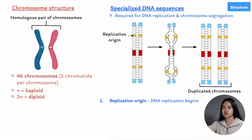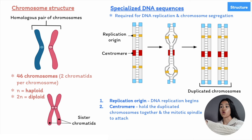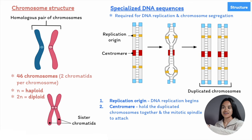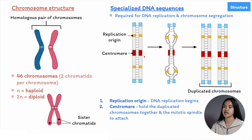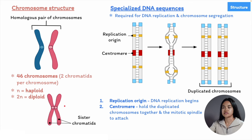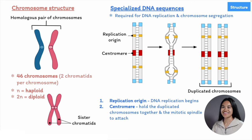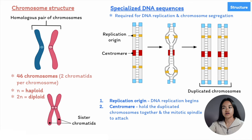Each duplicated chromosome consists of two sister chromatids — two copies of a chromosome — attached to each other by proteins called cohesins, closely joined at the centromere. Each sister chromatid has a centromere, which is the second specialized nucleotide sequence. The centromere assists in holding the duplicated chromosome together and is the region where the sister chromatids are most closely connected. There's a protein complex called a kinetochore that forms at the centromere, attaching the duplicated chromosomes to the mitotic spindle and allowing them to be separated. Once the sister chromatids separate, they are no longer called sister chromatids but individual chromosomes.